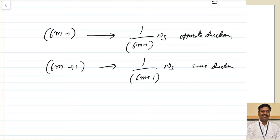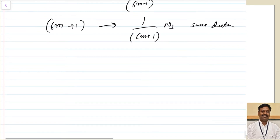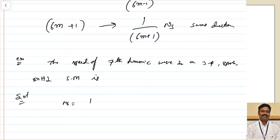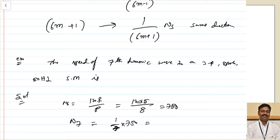Let us take one example to clarify. The speed of the 7th harmonic wave in a 3-phase, 8-pole, 50 Hz synchronous motor is: Ns = 120F / P = (120 × 50) / 8 = 750 RPM. The 7th harmonic speed = Ns / 7 = 750 / 7 = 107.14 RPM. That is the answer.